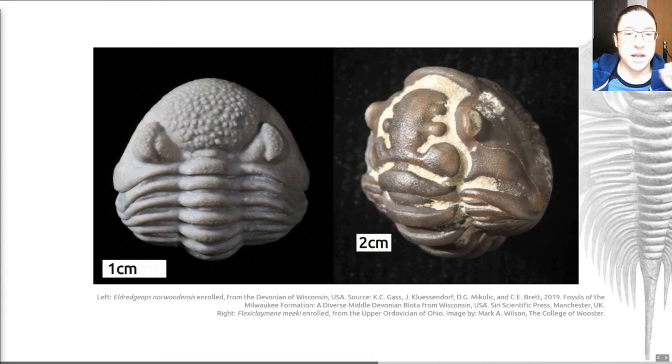For example, some groups can lock parts of the skeleton against each other. A group called the phacopids had tooth and socket pairs at the front and the back end that lock together, allowing the trilobite to create a really tight ball. That's a really cool adaptation. So be aware that trilobites had this behavior.